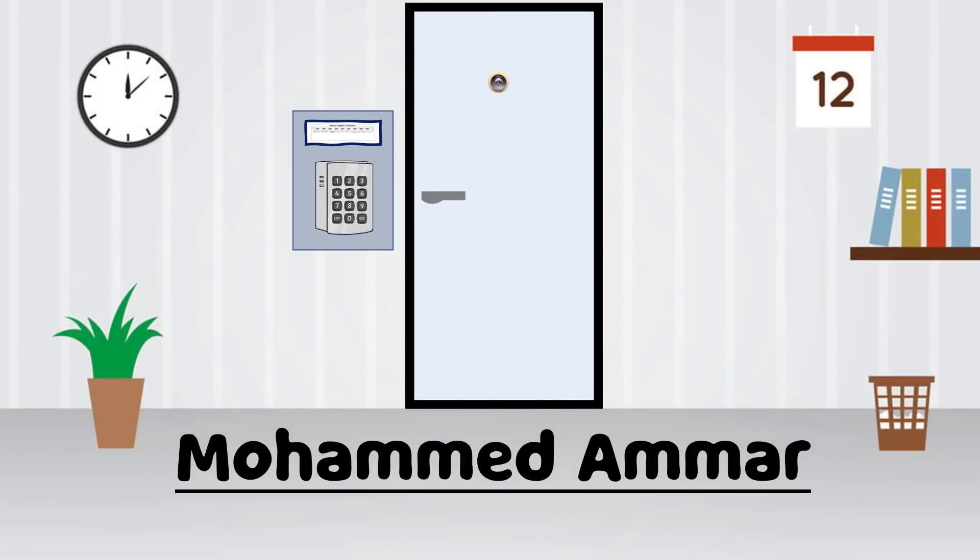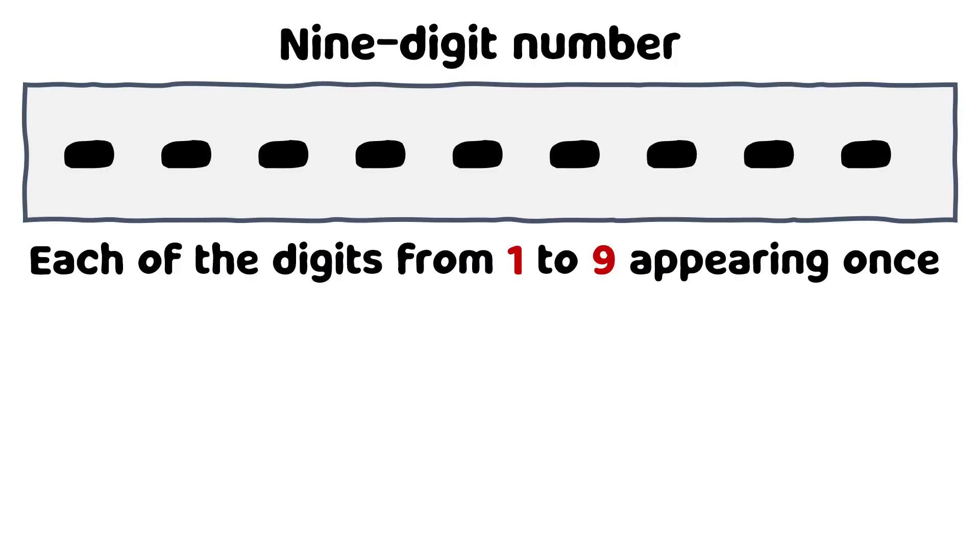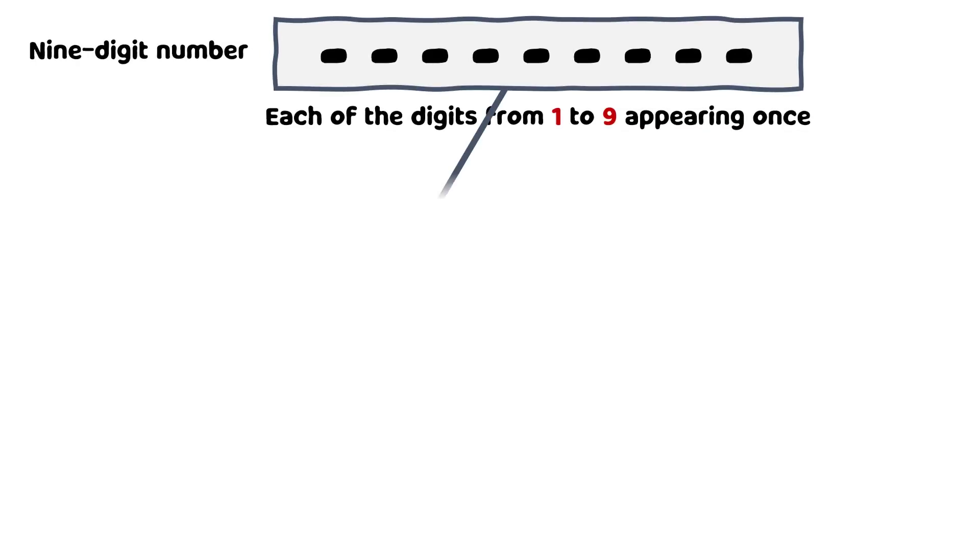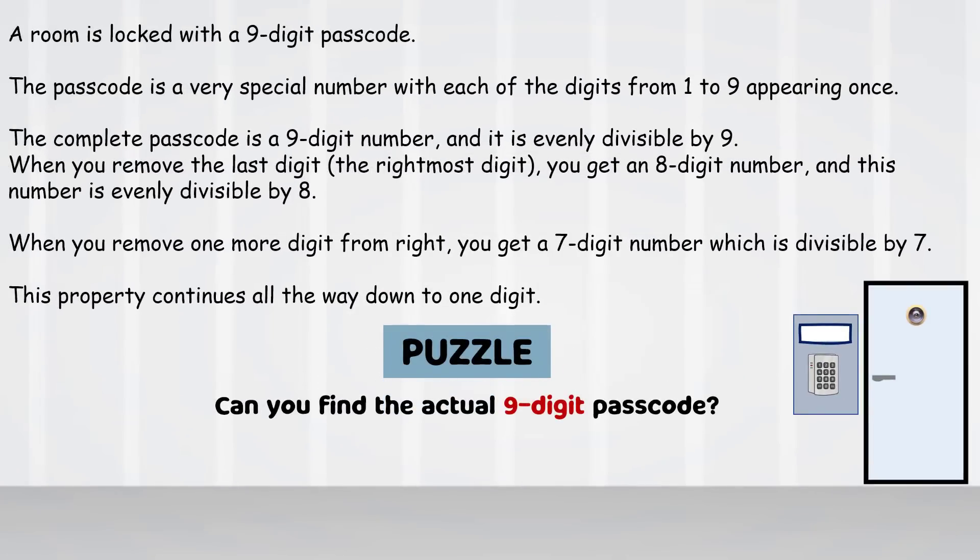A room is locked with a 9-digit passcode. The passcode is a very special number with each of the digits from 1 to 9 appearing once. The complete passcode is a 9-digit number and it's evenly divisible by the number 9. When you divide this number by 9, you won't get any fractional value. When you remove the last digit or the rightmost digit, you get an 8-digit number. This number is evenly divisible by 8. When you remove one more digit from right, you get a 7-digit number which is divisible by 7. This property continues all the way down to 1 digit. Can you find the actual 9-digit passcode to get through the door?